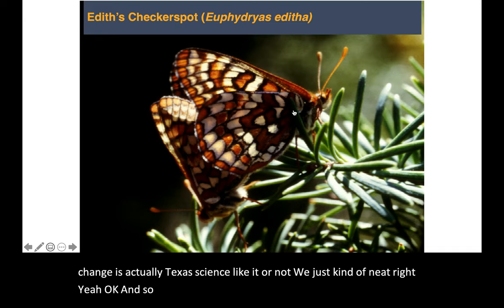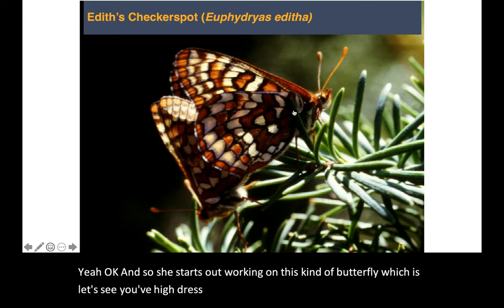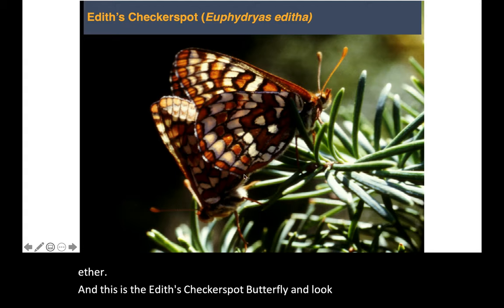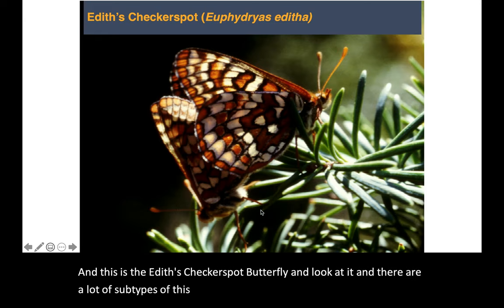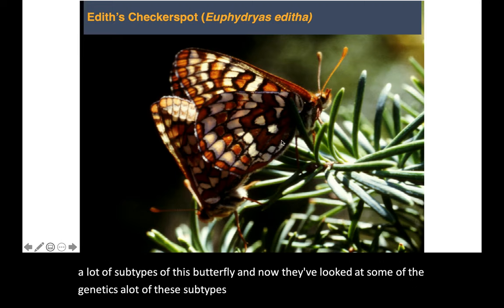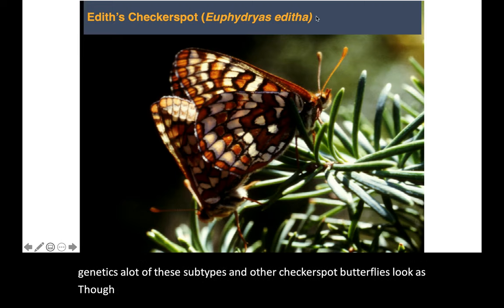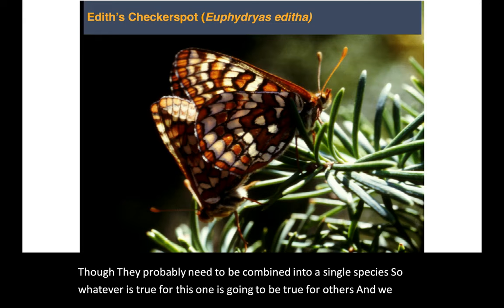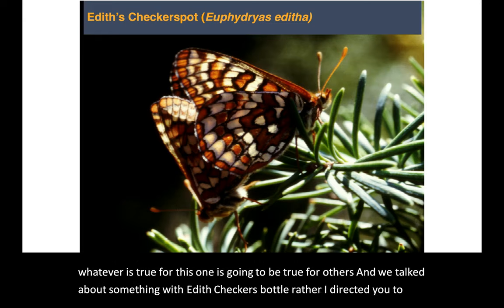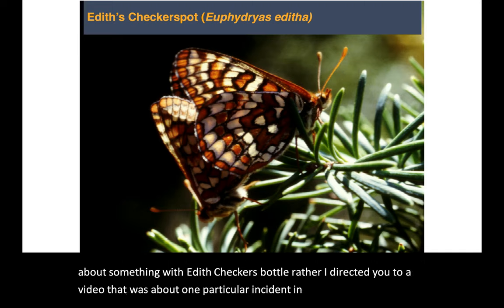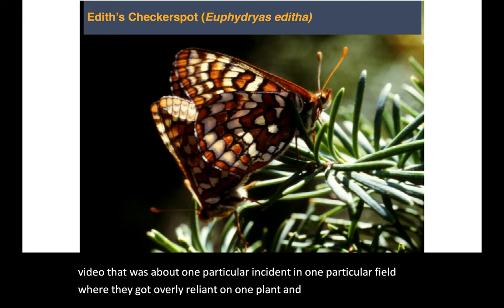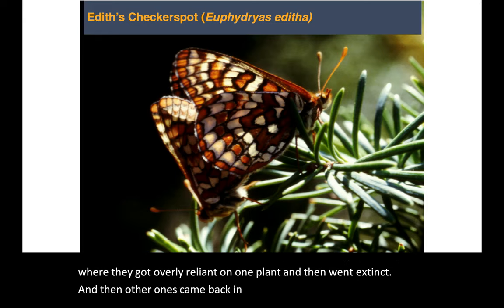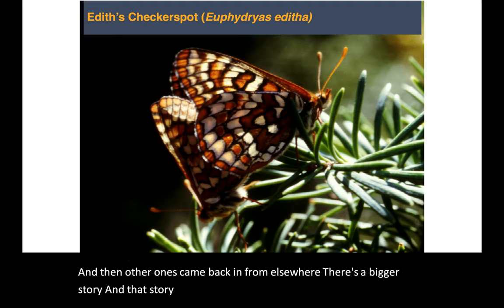She starts out working on a butterfly called Euphydryas editha — the Edith's checkerspot butterfly. There are a lot of subtypes of this butterfly, and now that they've looked at some of the genetics, a lot of these subtypes probably need to be combined into a single species. We talked about something with the Edith's checkerspot — that was about one particular incident in one field where they got overly reliant on one plant and then went extinct. But there's a bigger story, and that story started with the Edith's checkerspot.